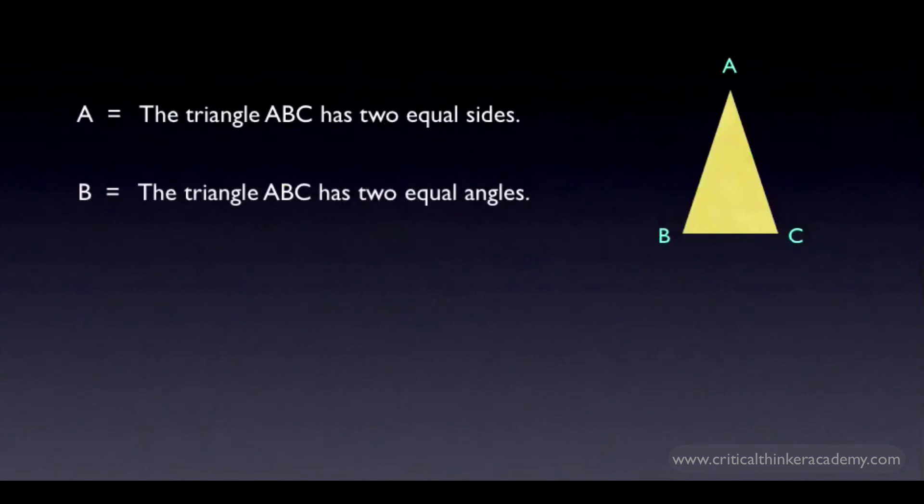Here's an example of a biconditional relationship whose truth is obvious. Let A be the claim that the triangle ABC has two equal sides. Let B be the claim that the triangle ABC has two equal angles. It's clear that if A is true, then B is also true.